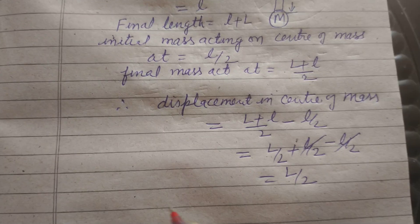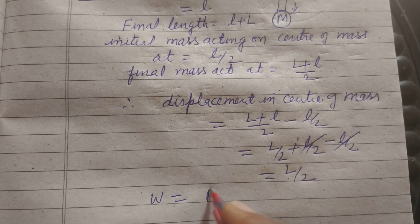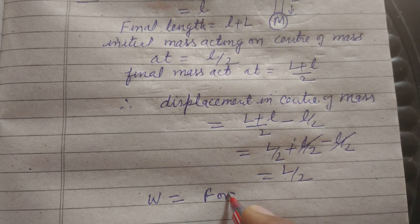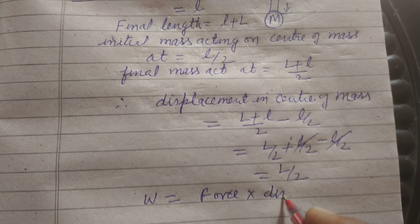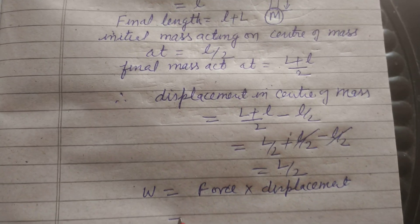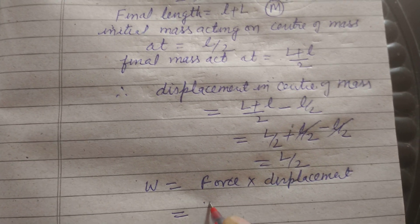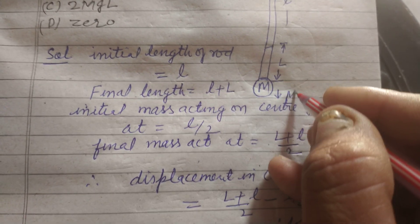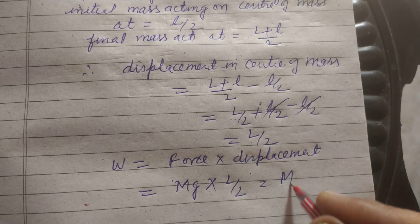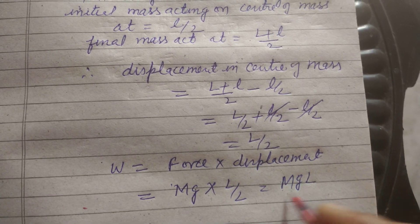This is the displacement, and work done is force times displacement. Therefore, force is Mg which works in downward direction. Displacement is L/2. So work done is MgL/2.